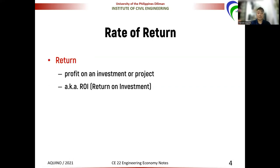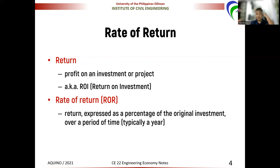Now, we talk about rate of return. When we say rate of return, it's the profit on an investment or a project, also known as ROI or return on investment. It's basically a measure of the profitability of an endeavor or project — the return expressed as a percentage of the original investment over a period of time, which is typically a year. But we all know that money has its time value, so it's not as simple as just calculating the percentage of what you'll earn divided by the initial investment, which we'll learn in subsequent lessons.